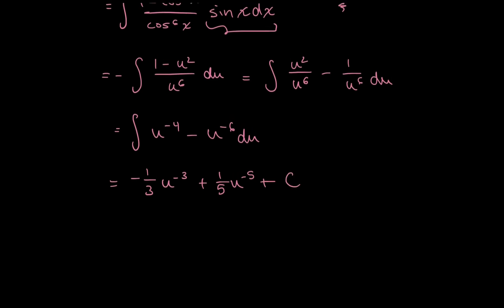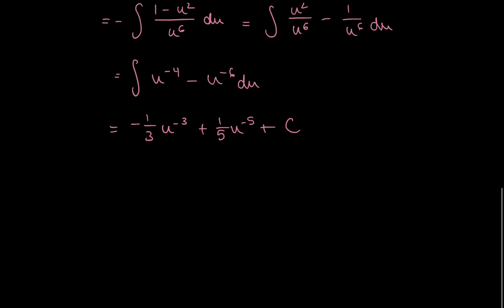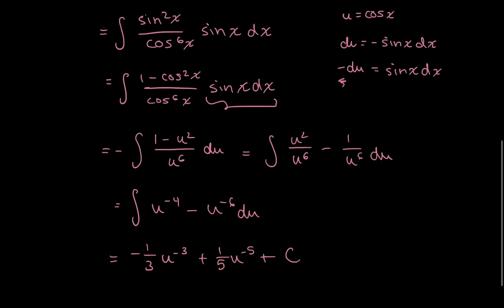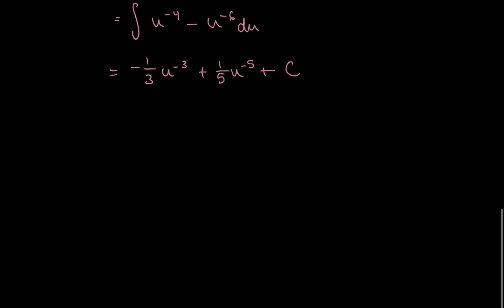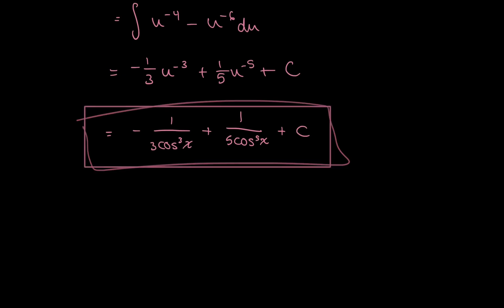Now, all I have left to do is just substitute what I had for u back in. And remember, I defined u to be cosine x. So all I have to do is just, instead of u, write cosine. So I have negative 1 over 3 cosine cube x plus 1 over 5 cosine to the power of 5x plus the arbitrary constant, c. And that's it.